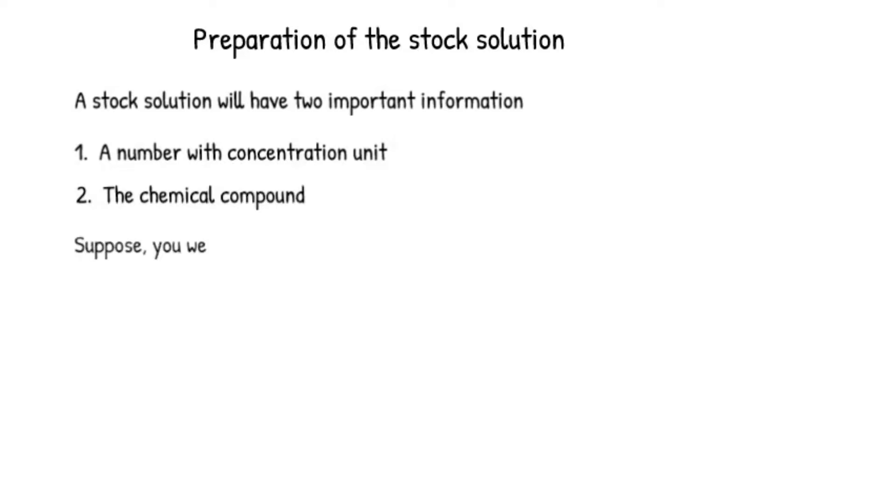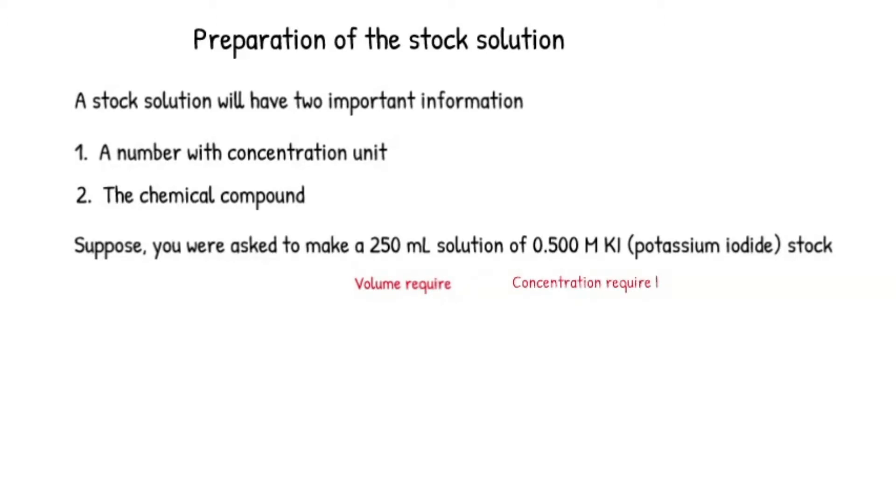Suppose you were asked to make a certain volume of a stock solution. In this example, 250 mL is the volume of stock solution and you want a concentration of 0.500 M potassium iodide stock. Remember M is the mole of solute divided by the volume of solution in liters.